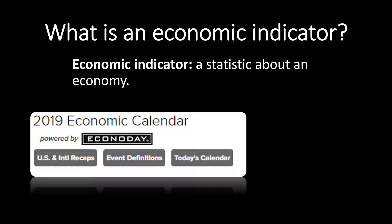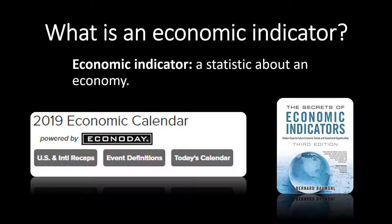The first one is a company called EconoDay, and they put out an economic calendar. This has a ton of economic indicators — it shows what economists are thinking is going to happen and gives definitions and explains why these economic indicators are important. There's also a book called The Secrets of Economic Indicators, currently in its third edition.